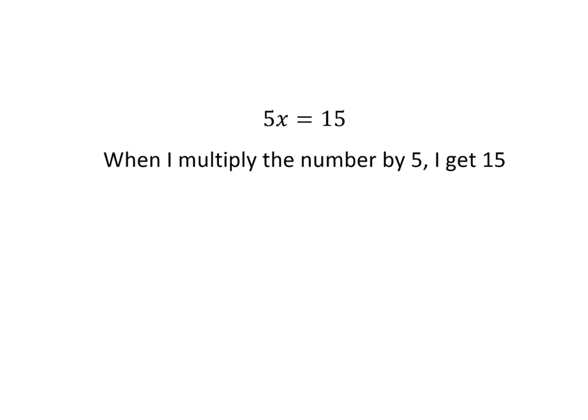Putting it into nice language, what this says is when I multiply the number by 5, I get 15. And when I put it that way, it's quite easy for me to figure out what the number, that mystery number that x is standing in place of is.